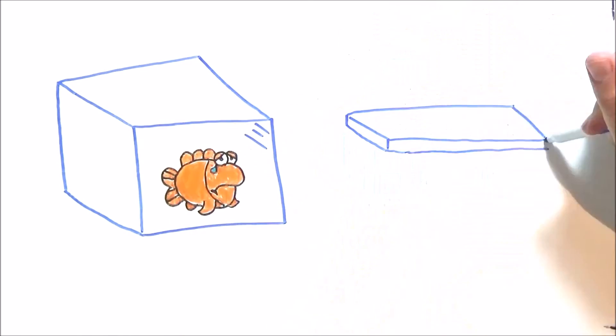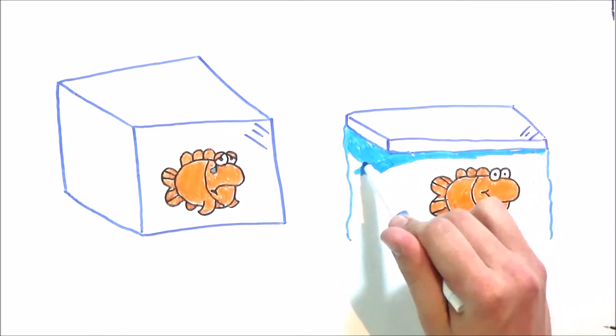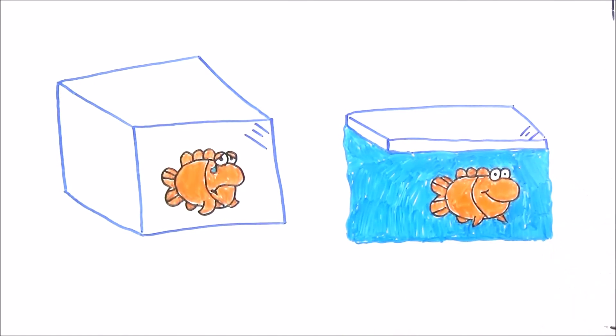Because ice floats and forms at the top of a body of water, it forms a shield of insulating protection that keeps the water underneath warmer and the fish safe.